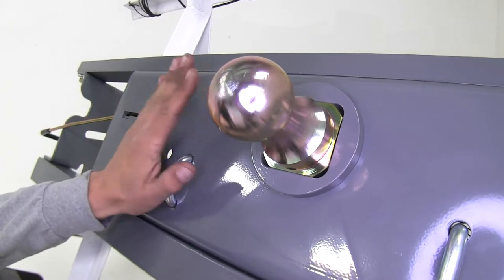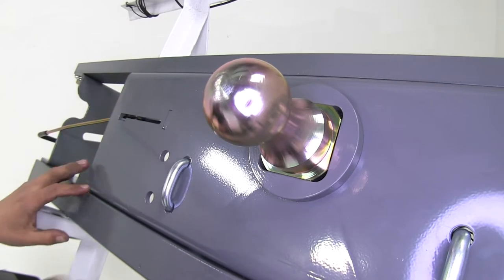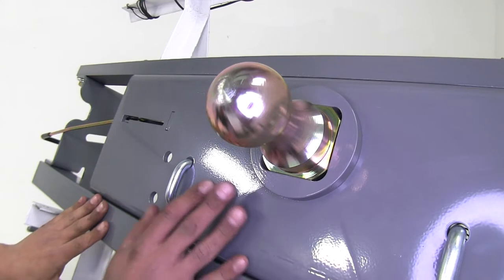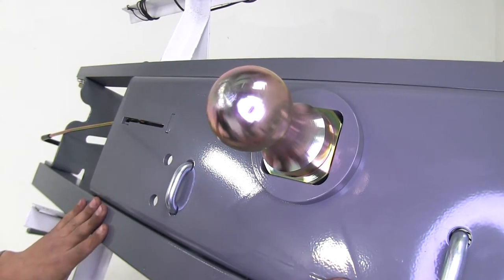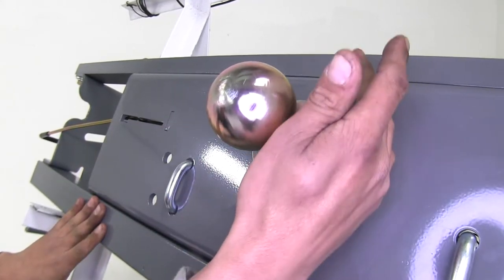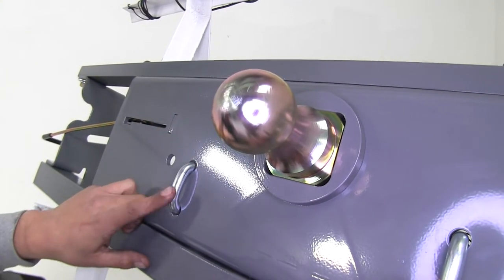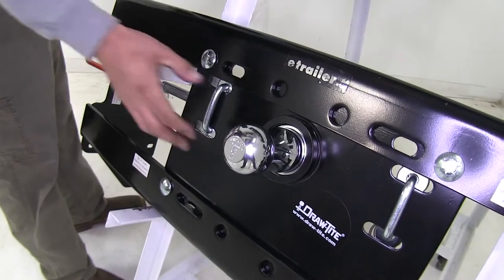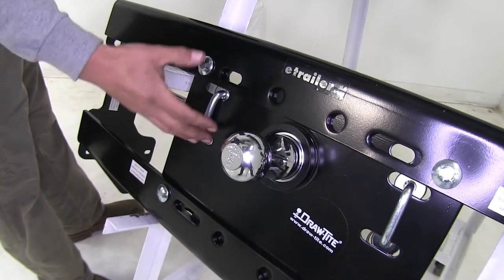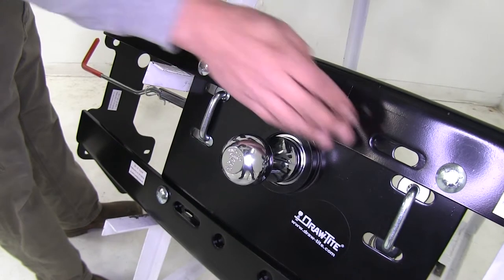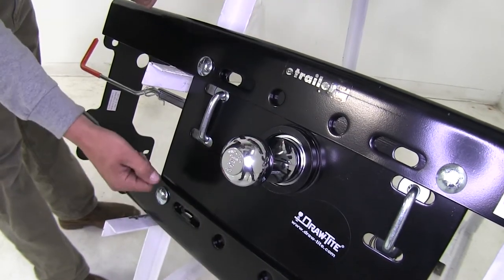Our B&W turnover ball, that's going to be relatively the same as far as the cross bars and frame brackets, but here in the middle since this is all going to be under the bed we're only going to have to cut one large hole in the center for our ball to come out as well as our safety chain loops. And the Hide-a-Goose is going to be relatively the same with just cutting one large hole as well as the safety chain loops and our brackets going to install the same.